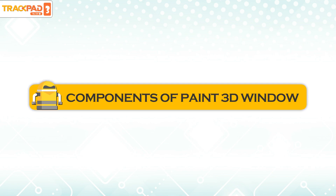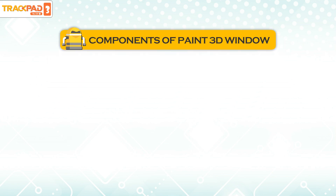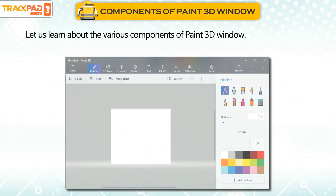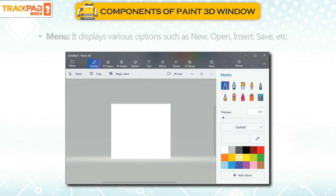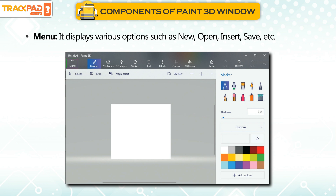Components of Paint 3D Window. Let us learn about the various components of Paint 3D Window. Menu: It displays various options such as New, Open, Insert, Save, etc.